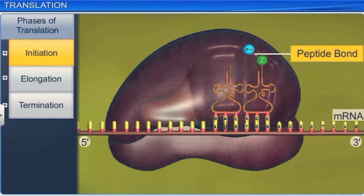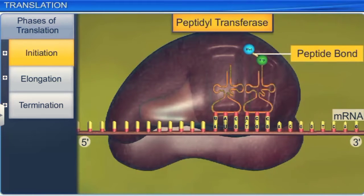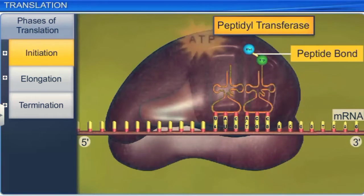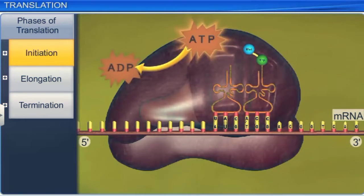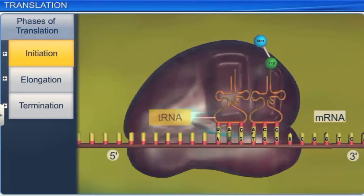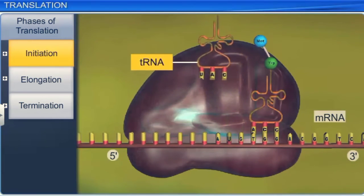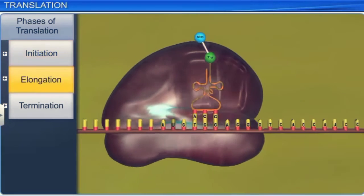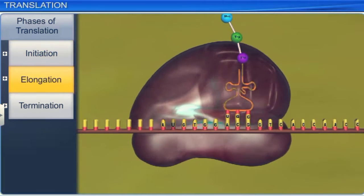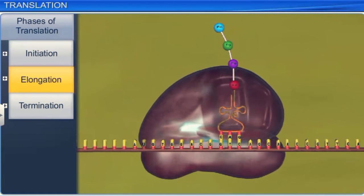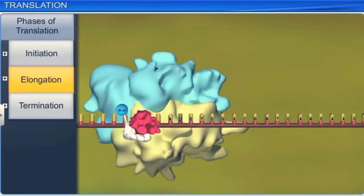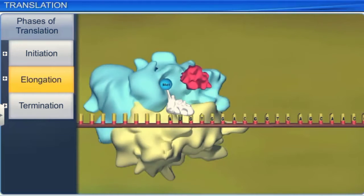The peptide bond formation is catalyzed by the peptidyl transferase enzyme. The formation of this bond requires energy, which is obtained from ATP. Simultaneously, the first peptidyl tRNA gets removed, leaving the amino acid. The next phase is elongation, in which the ribosome runs along the mRNA in the 5' to 3' direction, moving from codon to codon and adding subsequent amino acids to the growing polypeptide chain. This is caused by the elongation factor translocase, and this process is called the translocation step.